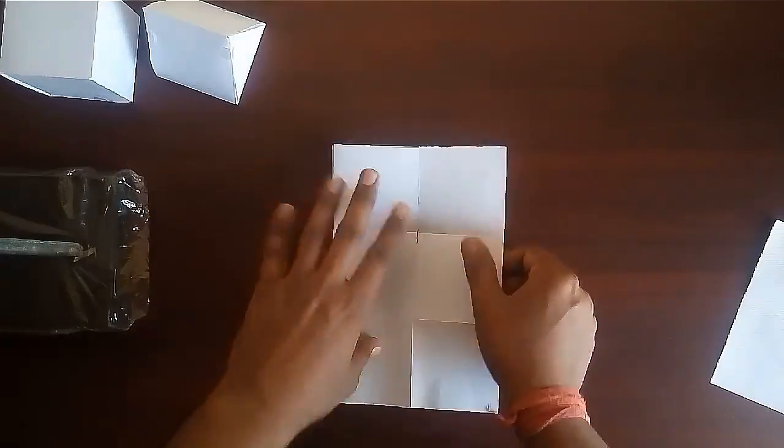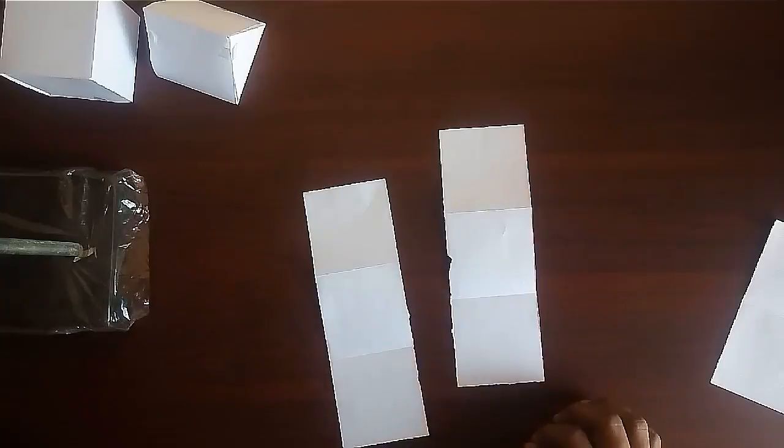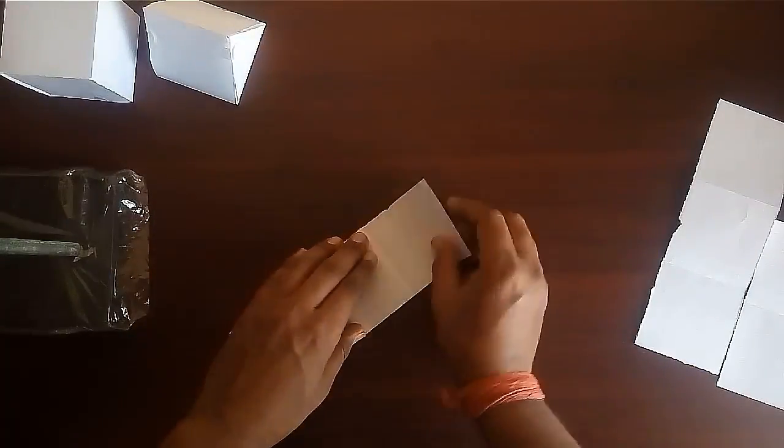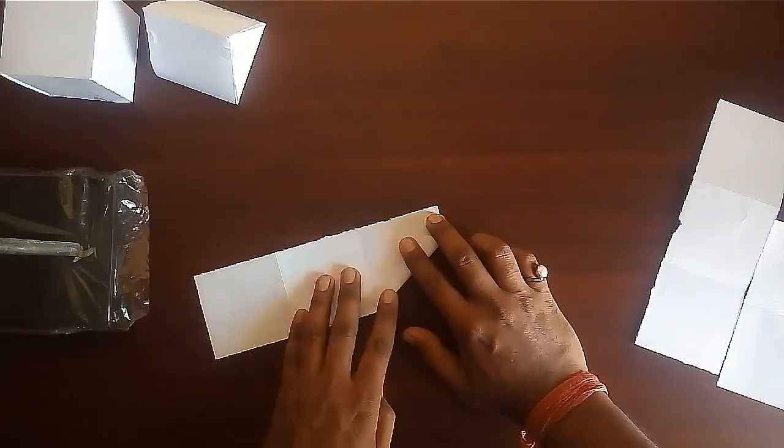Remove 2 squares. Now divide the sheet into 2 parts of 3 squares each. Take the first sheet.